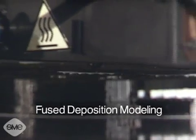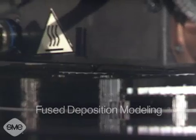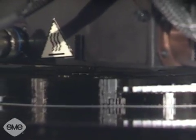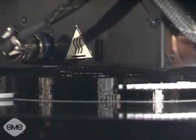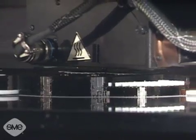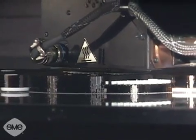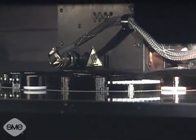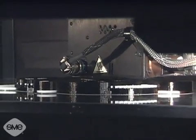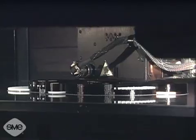Fused deposition modeling involves feeding a thermoplastic filament into a heated extrusion head that moves in the X and Y axes. The heated extrusion head melts and deposits the thermoplastic material on a table that moves in the Z axis, building the model.